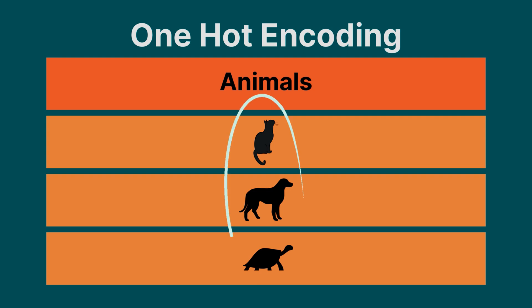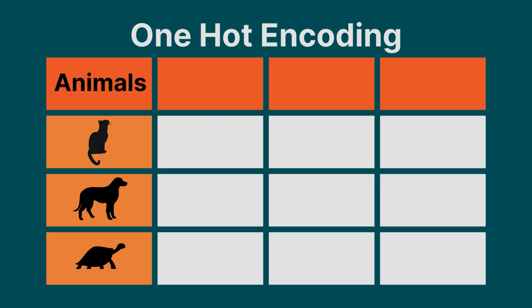OneHot encoding is a way of representing categorical values in a numerical way. How does it work? We create an array that has as many elements as the number of categories. To represent a category, we have an array that consists of 0 everywhere except the element that corresponds to this category. In that location, the value is 1.